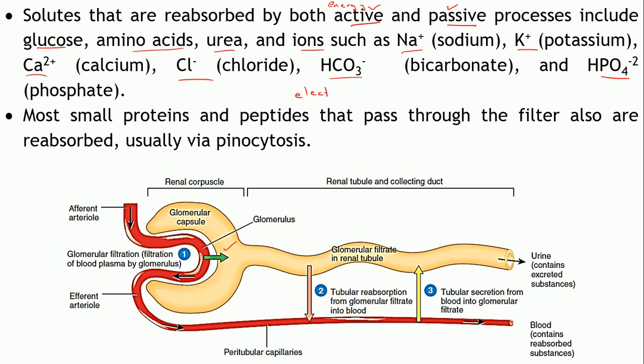These ions are required by the body in specific amounts; if lost, the electrolyte balance would be disrupted. Most of the water is also filtered out, and if not reabsorbed, the fluid-electrolyte balance would be disrupted. Apart from ions and water, most small proteins and peptides that get filtered are also reabsorbed — by the process of pinocytosis, that is, cell drinking.